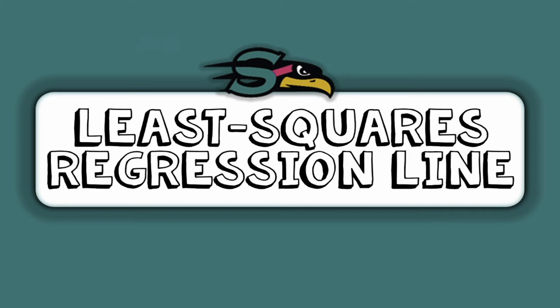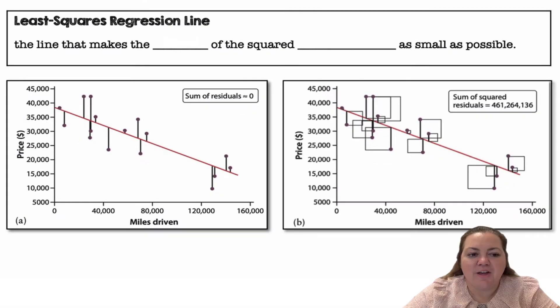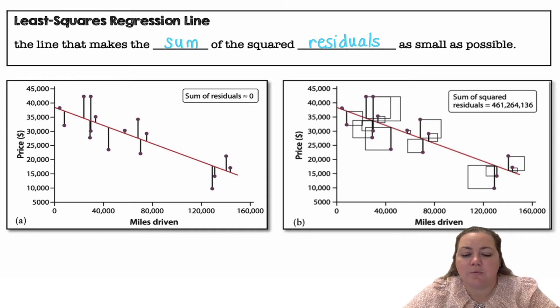Hey there, Seahawks. It's Ms. Adams, and in this video we're going to learn about the least squares regression line. All right, so the least squares regression line is the line that makes the sum of the squared residuals as small as possible.